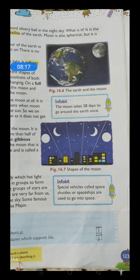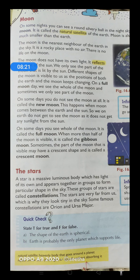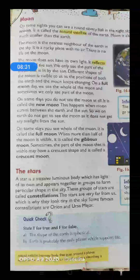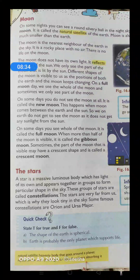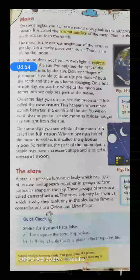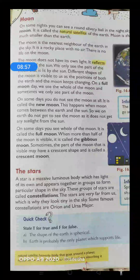Figure 16.7 mein aap saare moon ki shapes dekh sakti ho. Now, the stars. What is a star? A star is a massive luminous body which has light of its own and appears together in groups to form a particular shape in the sky. Star kya hai? Ek bahut bada massive luminous body — luminous means which gives out light. Which has light of its own. Star ka apna own light hota hai, jabki moon ek natural satellite hai jiska own light nahi hota.